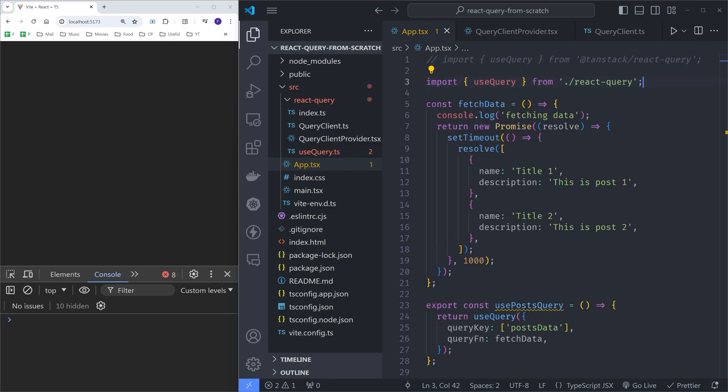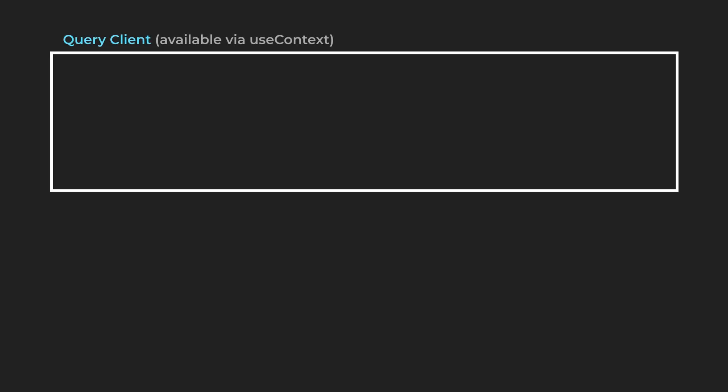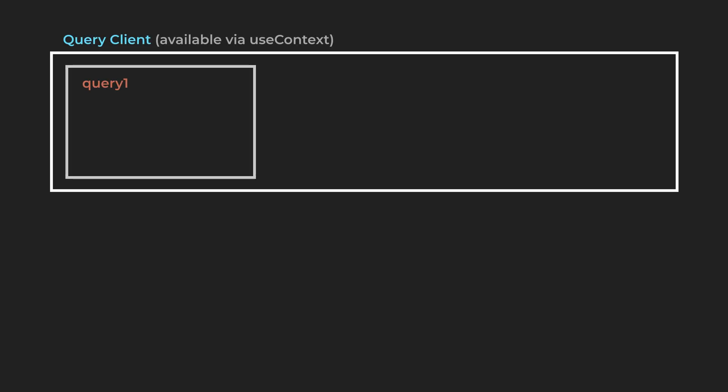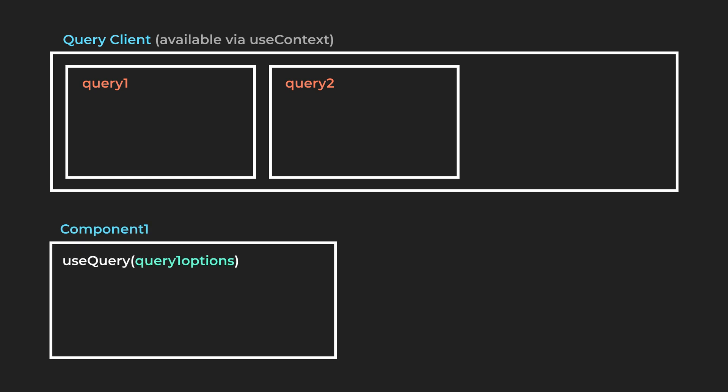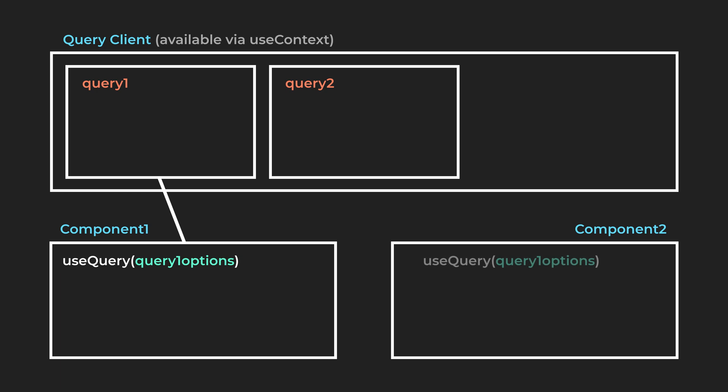Now let me give you a high-level overview of what we are going to do. The first idea of React Query is to reuse queries across components. To do that we will use the QueryClient along with context. We will store the queries in the client and since the value of the context is the QueryClient, they will be accessible via the useContext hook. Whenever a component uses a query, it will check whether the query exists in the client — if it does, the component will reuse it; if not, a new one will be created and stored in the client.